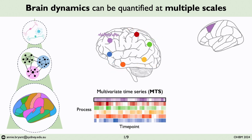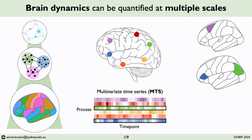One way we might slice and dice this multivariate time series is to zoom in on one brain region and compute properties of its local activity, like the fractional amplitude of low-frequency fluctuations. We could also look at statistical dependencies between time series derived from two different brain regions, allowing us to measure the functional connectivity using a metric like the Pearson correlation coefficient.